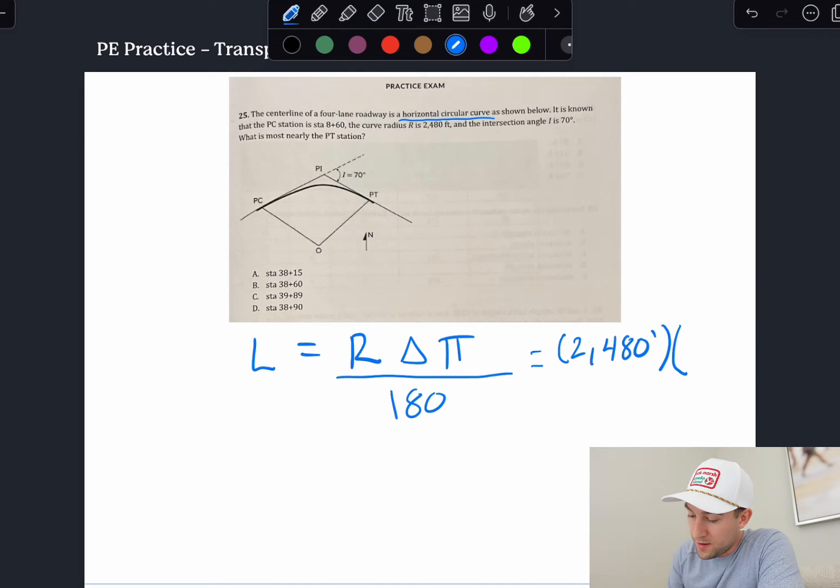So what is this delta? Well, that delta there is actually this intersection angle I, which is 70 degrees. So let's go ahead and plug that in. And then we have pi over 180 here to actually convert that degree there because we're trying to solve for this L, which is a linear feet.